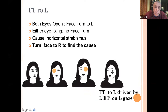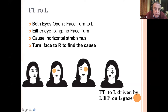Face turn to the left can be caused by strabismus. Here we have a patient with a face turn to the left. With left eye fixing — no face turn. With right eye fixing — no face turn. With both eyes fixing — she has a face turn. We turn the face to the right to find out what is causing it. In this case the face turn to the left is caused by left esotropia — horizontal strabismus.